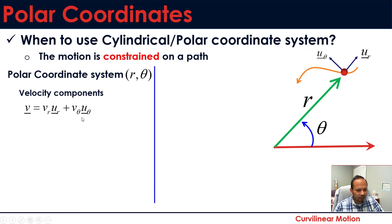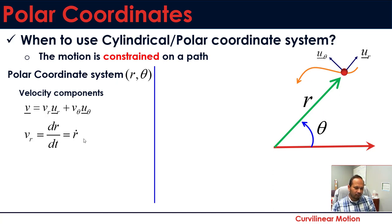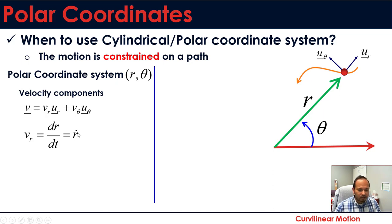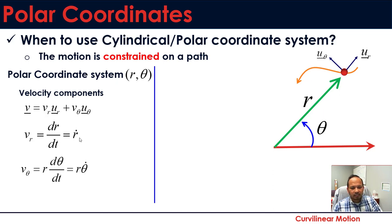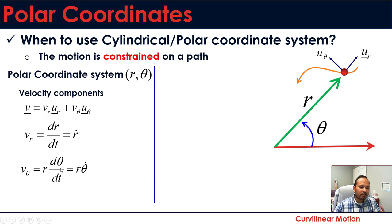The components of velocity are v_r and v_theta. v_r, the radial component, is the time derivative of r — written as r_dot (dr/dt). Similarly, v_theta is r times d_theta/dt, which is r times theta_dot. If you know both components, you can find the total magnitude of velocity using the Pythagorean theorem: square each component, sum them, and take the square root.